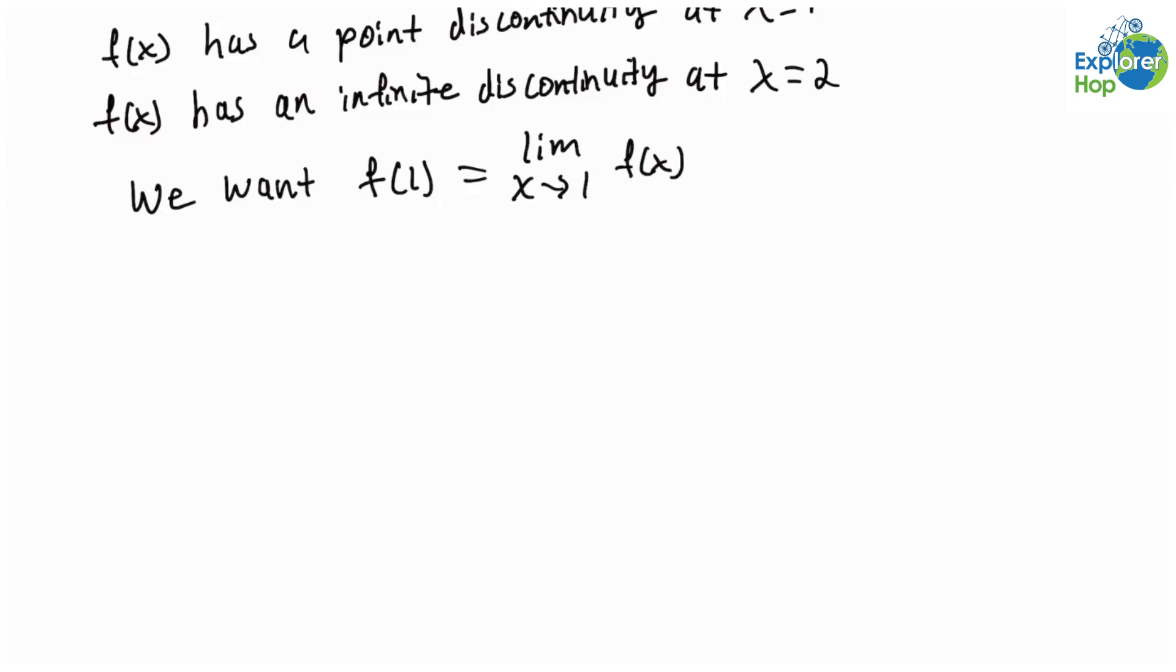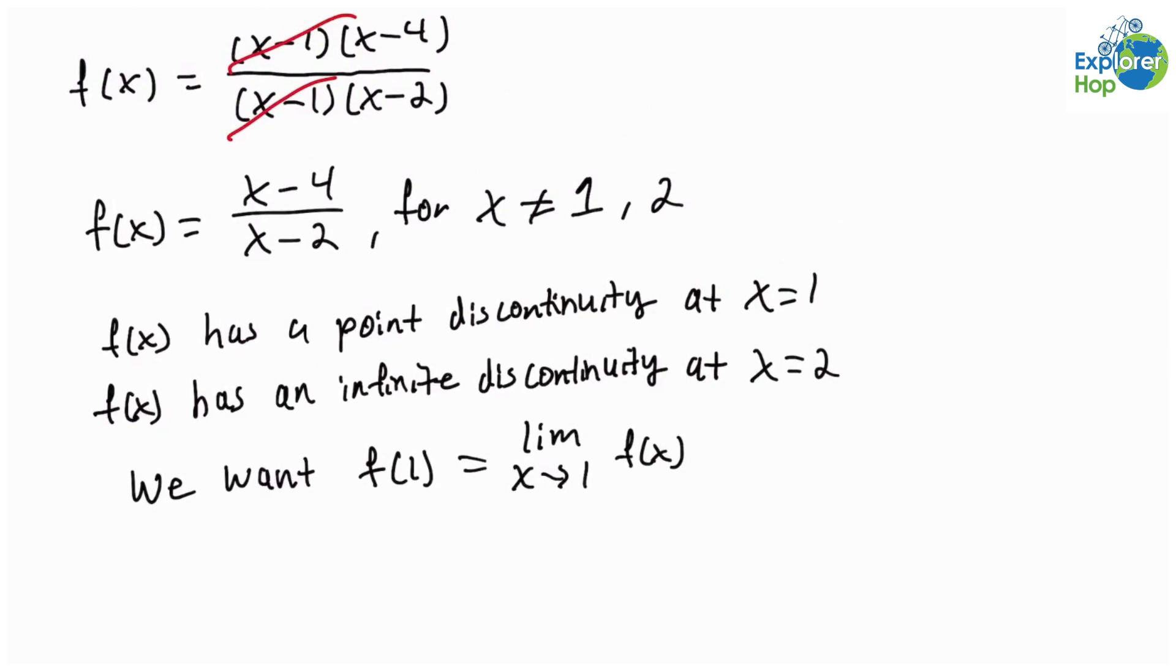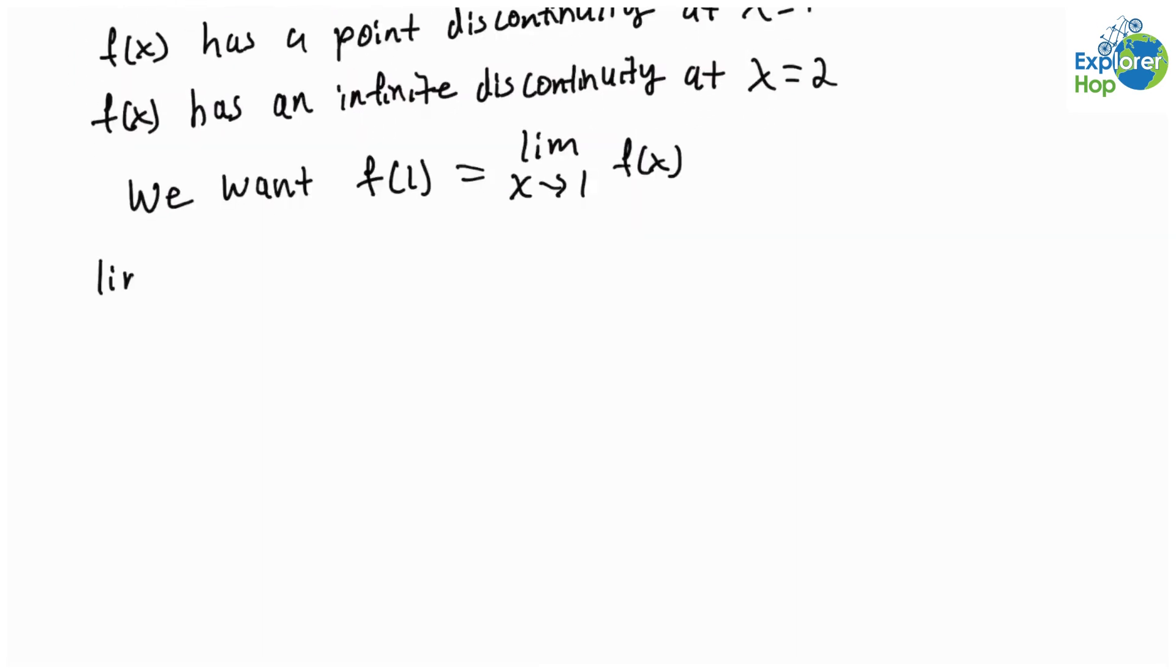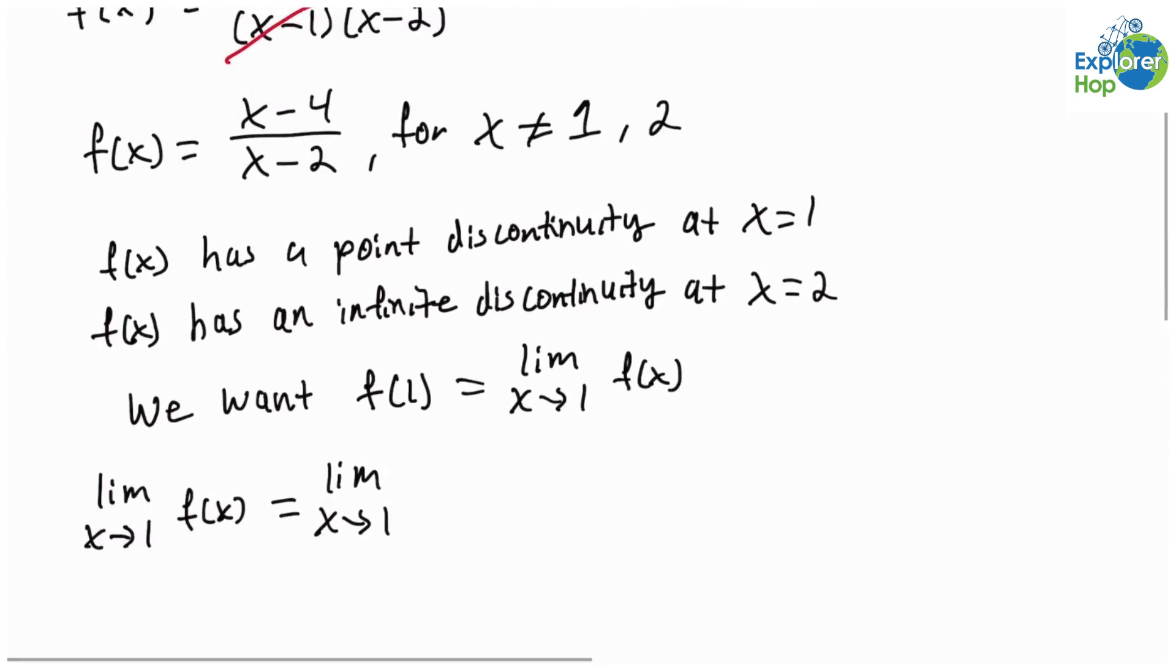From above, we get that the limit as x approaches 1 in the function f(x) is equal to the limit as x approaches 1 in the function (x - 4) / (x - 2).